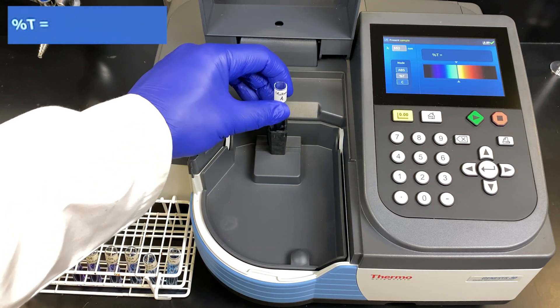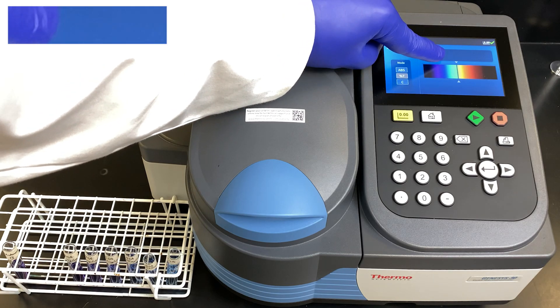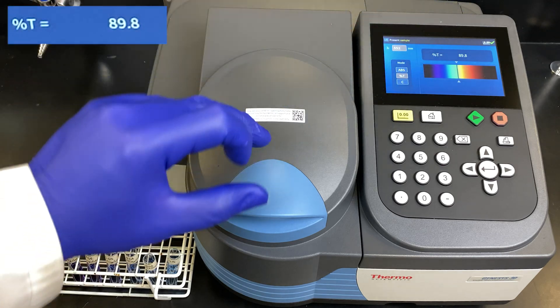Now our unknown, unknown A, the lighter colored one. Place it inside, close the door, wait for it to stabilize. 89.8 appears to be our value for unknown A.